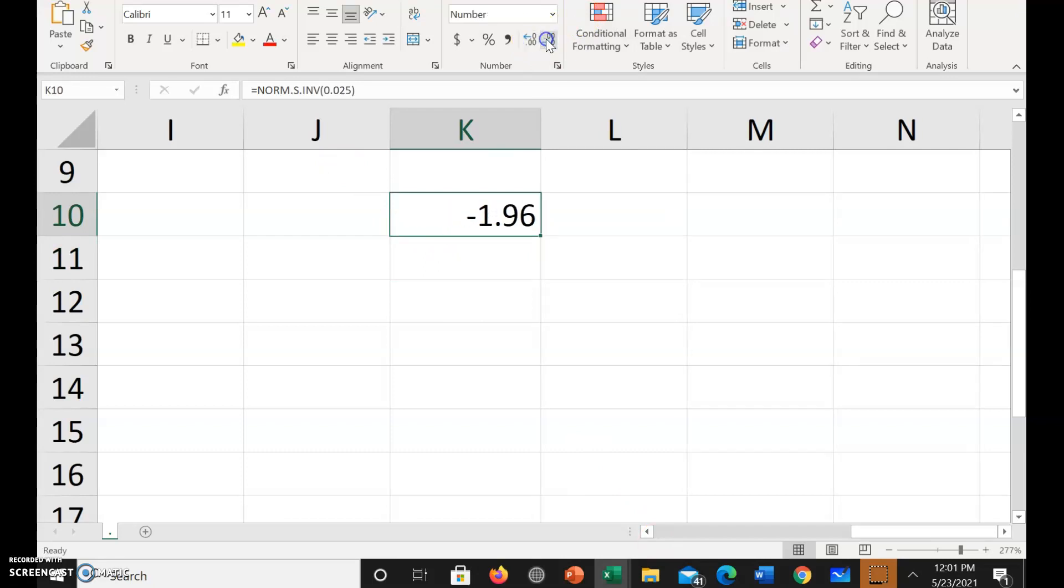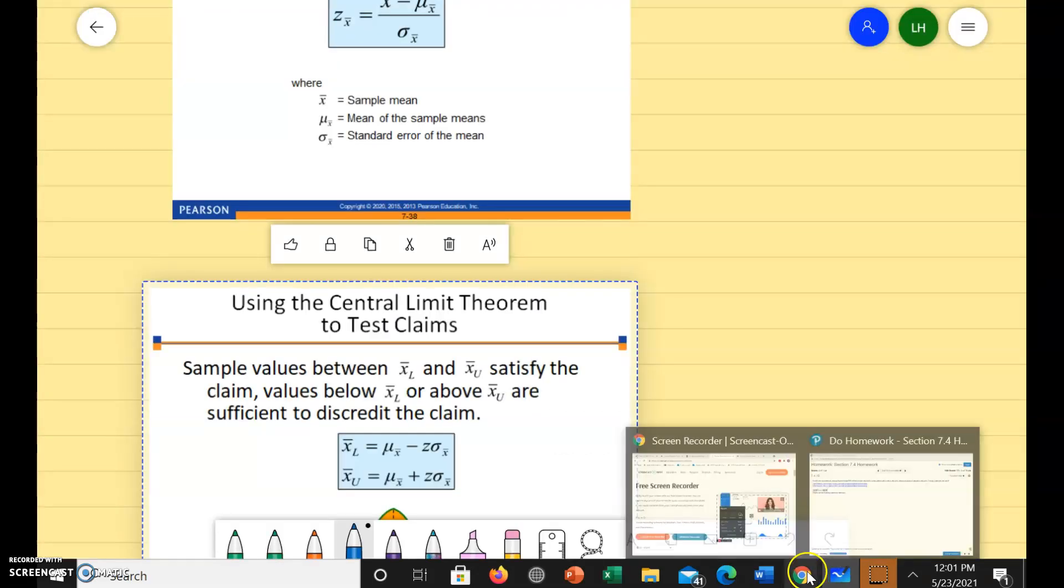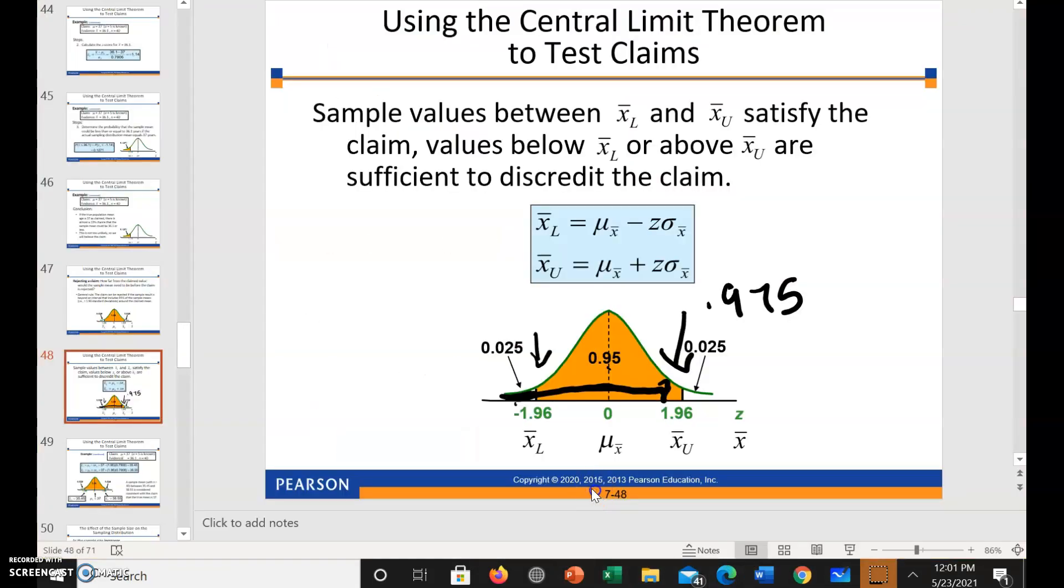But if we're looking for an interval, it's going to be symmetric. So our left z is negative 1.96. Now, let's just see if we get positive 1.96 for the z value to the right.